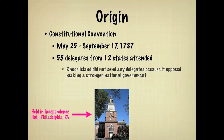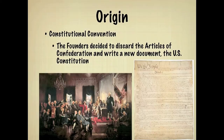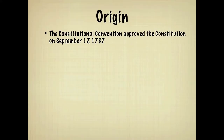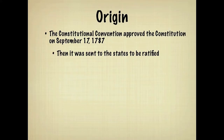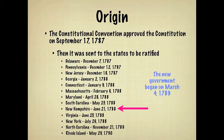At the Convention, the Founders decided to discard the Articles of Confederation and write a new document, the U.S. Constitution. After much debate, the Constitutional Convention approved the Constitution on September 17, 1787, and then it was sent to the states to be ratified, or approved. The Constitution became the new framework of government after 9 out of 13 states ratified it, although all 13 eventually did. The new government officially began on March 4, 1789.